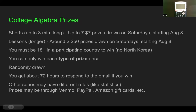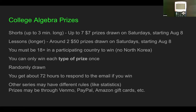Winners are randomly drawn from a Google Sheet, and you get about 72 hours to respond to the email if you win. Other series may have different rules — for example, if I have a statistics series, you'll probably be able to win that in addition to college algebra, but I'll explain that once that series starts. Prizes can go through Venmo, PayPal, Amazon gift cards, etc. — pretty much anything.